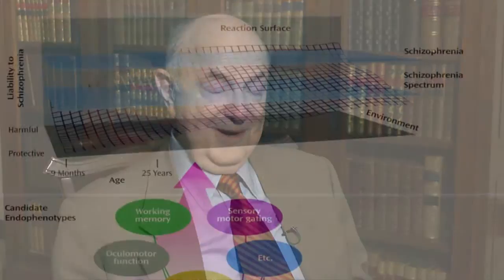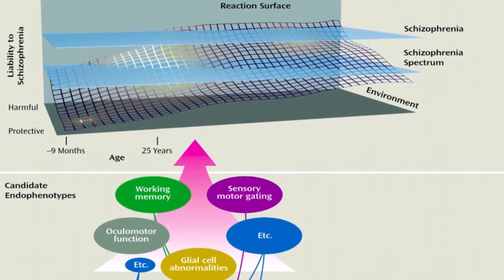We realized that maybe we could draw a picture that would explain to everybody what we meant by endophenotype. We started to work on a diagram, which we realized we better call a cartoon so people wouldn't take it too seriously and hold our feet to the fire. And we came up with this picture.